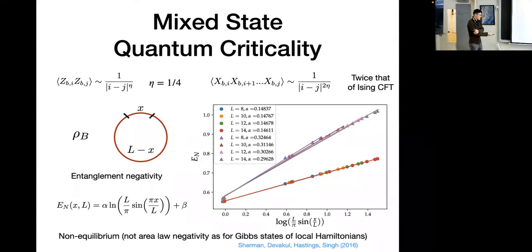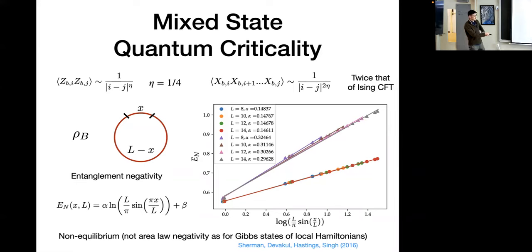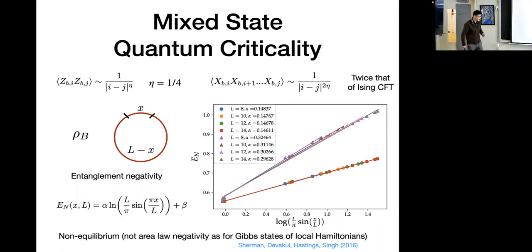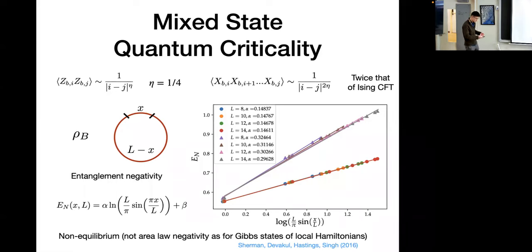This log scaling of negativity is a direct signature of the non-equilibrium nature of the state. Some of you might know that for a Gibbs state or equilibrium Gibbs state of a local Hamiltonian, such states have a strict area law for entanglement negativity. So the fact that we're getting log scaling is a direct signature that it looks nothing like a Gibbs state of a local Hamiltonian.